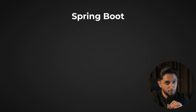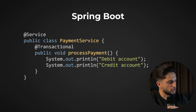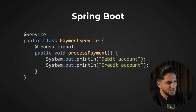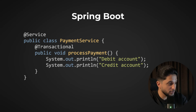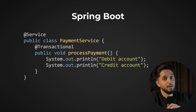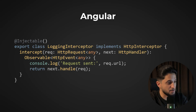In Spring Boot, proxies are everywhere through aspect-oriented programming. When you use @Transactional, @Cacheable, or @Secured, Spring creates a proxy around your bean that intercepts method calls. The proxy handles transaction management, caching logic, or security checks before delegating to the actual method. Under the hood, Spring's proxy factory generates these wrapper objects at runtime.